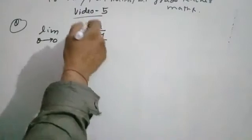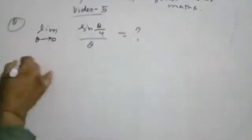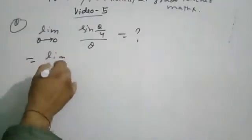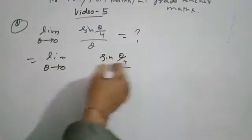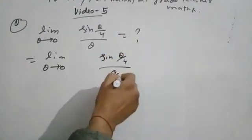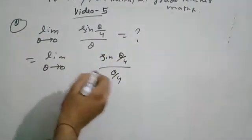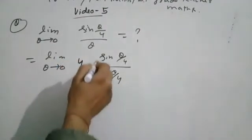Limit θ tends to 0 of sin(θ/4) / θ equals k. We rewrite as limit θ tends to 0 of sin(θ/4) / (θ/4), then multiply and divide by 1/4.